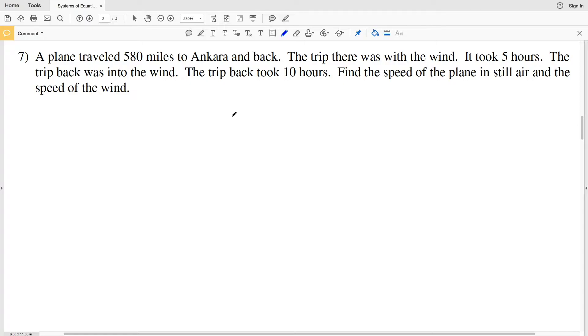It states that a plane traveled 580 miles to Ankara and back. The trip there, with the wind, took 5 hours, and the trip back was into the wind and it took 10 hours. So with the wind helping, it takes only 5 hours to get there, and against the wind, it takes 10 hours, double that original time. Now, we're to find the speed of the plane if it were in still air and the speed of the wind. So let's call that speed of the plane in still air P, and the speed of the wind W.